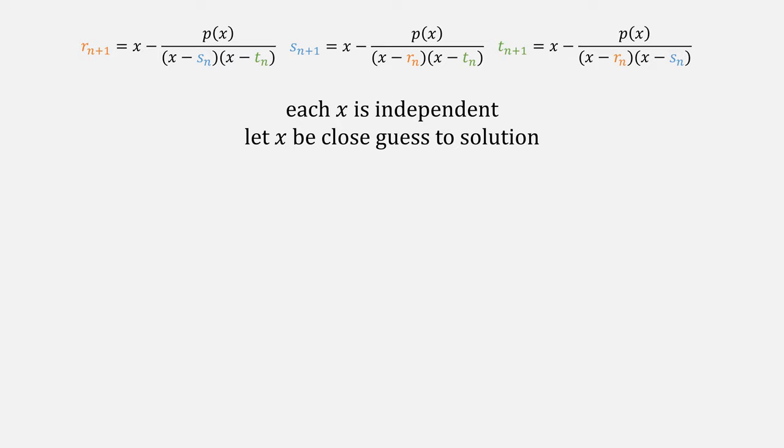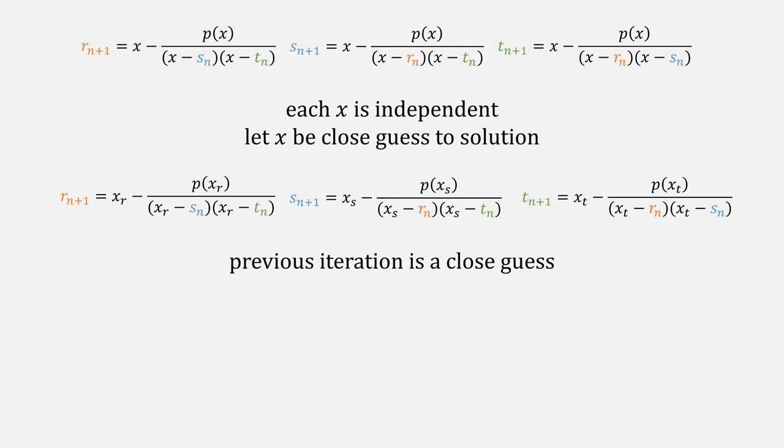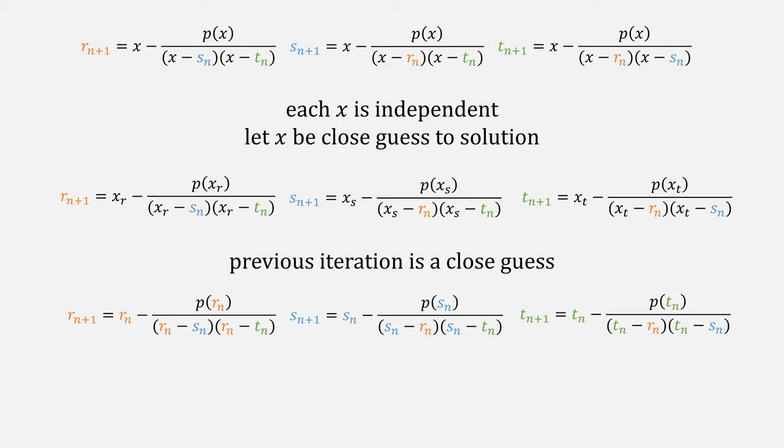And each of these x terms is independent from each other in each of the equations. So we can just let x be a close guess to the solution, such as this. But what already is a close guess was the previous version of the iteration. So we'll replace those terms with the previous values for r, s, and t.